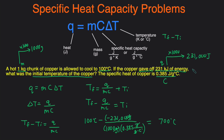That's how you do specific heat capacity problems. Once a question mentions specific heat capacity, use Q equals MC delta T. Identify which variable you're solving for, use algebra to isolate it, and plug in the numbers. Just make sure the units are correct: Q in joules, M in grams, C in joules per gram times degrees Celsius (or Kelvin), and delta T in degrees Celsius or Kelvin, solved using final temperature minus initial temperature.